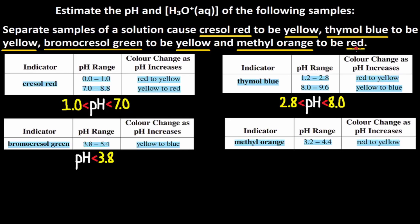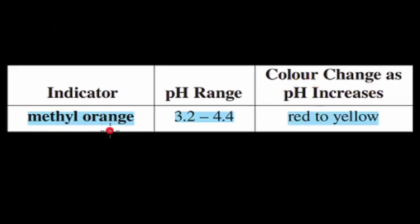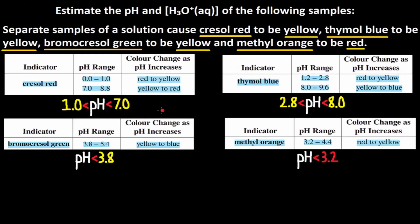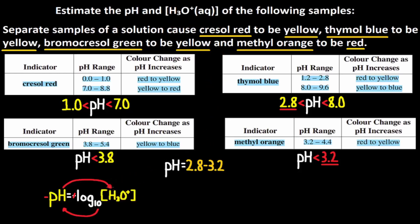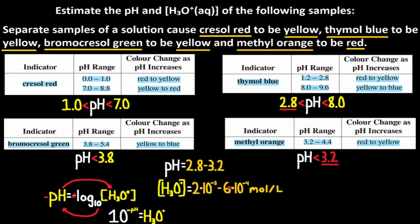Finally, it tells us that methyl orange is red. The color change for methyl orange is red to yellow. Red is on the left side and 3.2 is on the left side, so the pH has to be less than 3.2 for methyl orange to be red. To estimate the pH, we find the minimum and maximum. Left side numbers are 1.0, 2.8, nothing, and nothing — the minimum pH is 2.8, because if the pH was less than 2.8, diamond blue wouldn't be yellow. Right side numbers are 7.0, 8.0, 3.8, and 3.2 — the maximum is 3.2, because if the pH was greater than 3.2, methyl orange wouldn't be red. So the pH is between 2.8 and 3.2. Using 10 to the negative pH, we get an H3O+ concentration between 2×10⁻³ and 6×10⁻⁴ moles per liter.